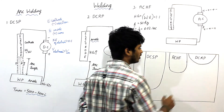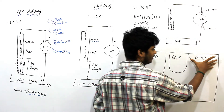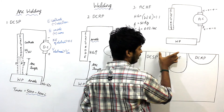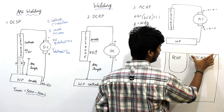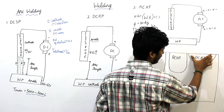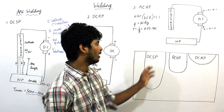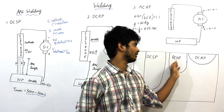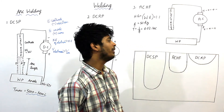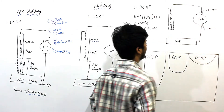Because of this, the deposition rate in DCRP is high. Compared to the other two welding processes, in DCRP the deposition rate is very high, and because of the high deposition rate, a higher welding speed is possible in DCRP compared to the other two welding processes.